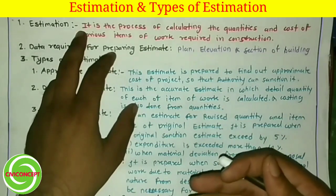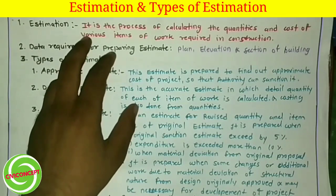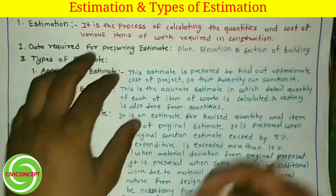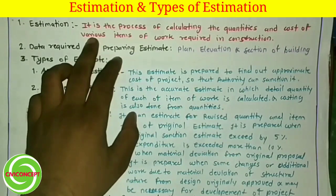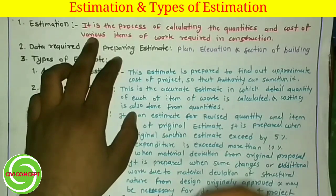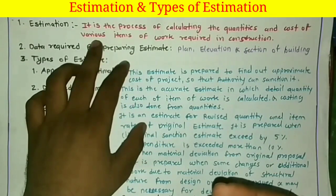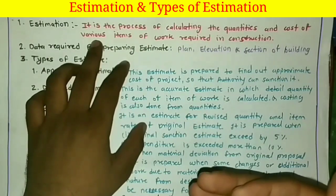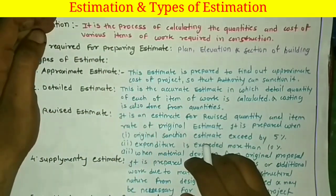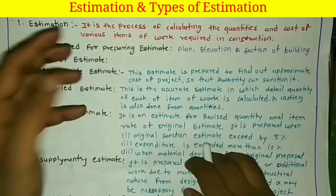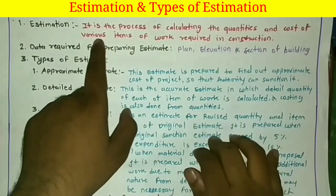Why do we calculate the estimate before the project? This question may arise in your mind. Before starting any project we require the total cost of that project. To get the total cost, we need the quantities — like cement and aggregate — and once we have those quantities we can find out their cost and ultimately get the total cost of the project. So estimation is required before starting any construction project.